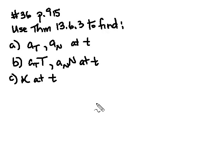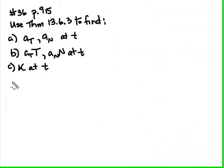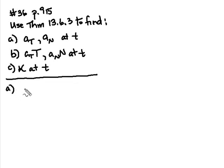Let's look at how we're going to do this. In theorem 13.6.3, we see a formula for A sub T and A sub N. So let's start with part A, looking at that formula. The formula for A sub T is going to be V dot A divided by the norm of V.